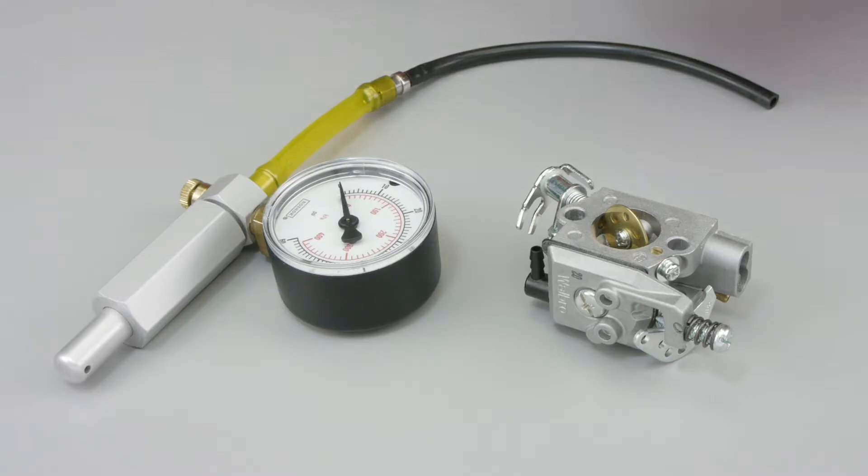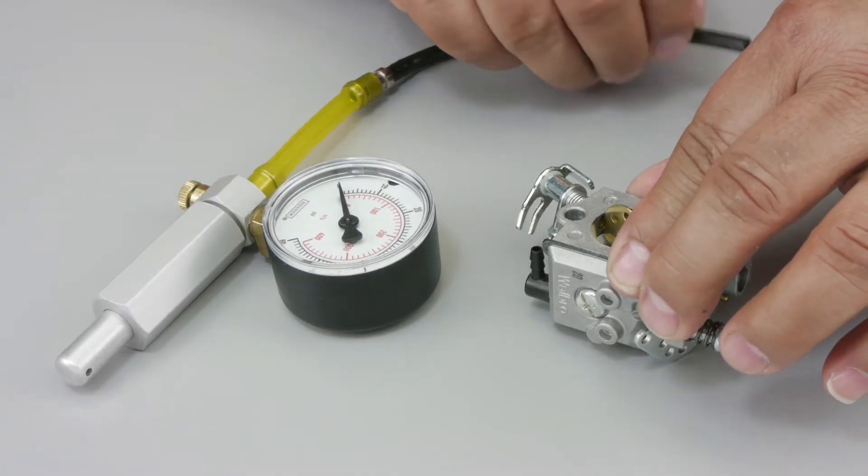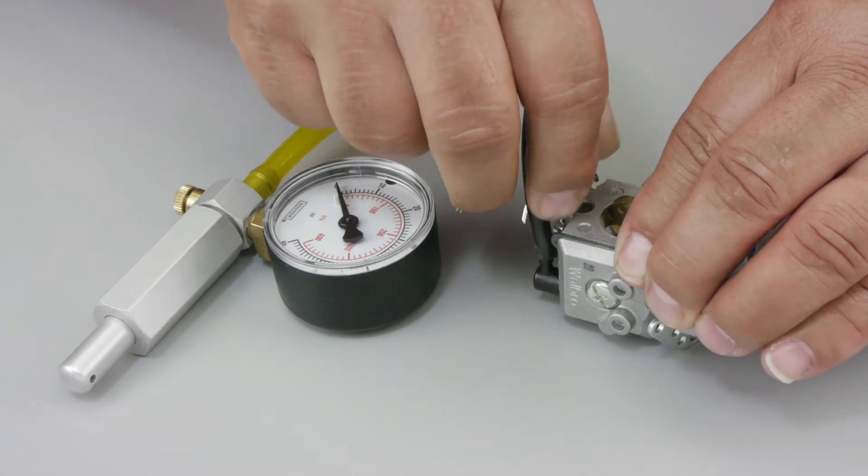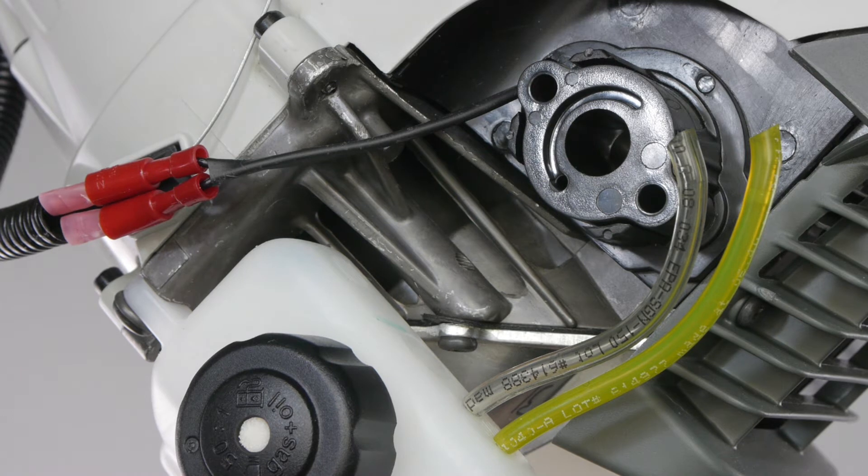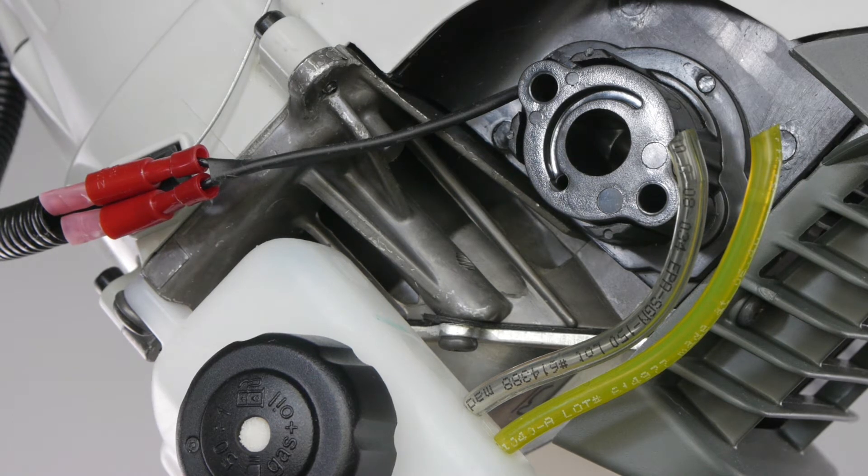Complete the pressure check by performing the same test at the carburetor's fuel inlet. If pressure tests show proper needle operation, it's time to check the carburetor mounting area and the manifold and gasket connecting the carburetor to the engine's crankcase for wear or damage.